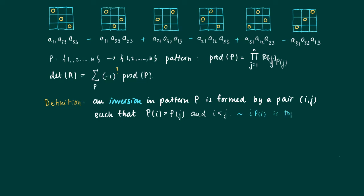What does it mean? Well, if you look at the place in the matrix, (i, P(i)) is on the top right compared to (j, P(j)), and we say that this is an inversion.